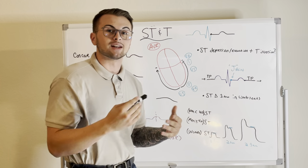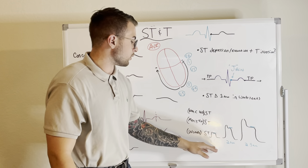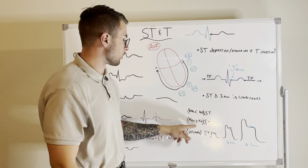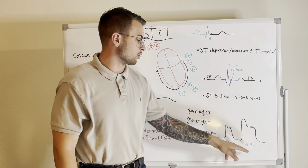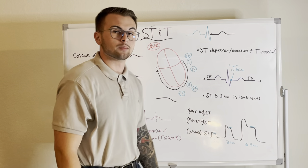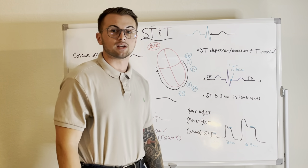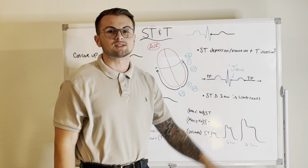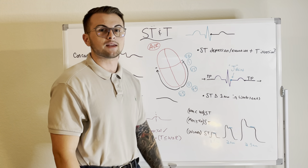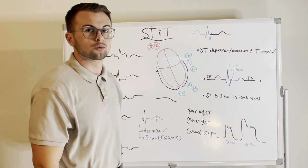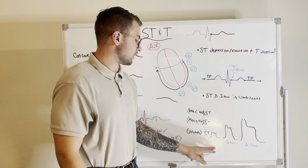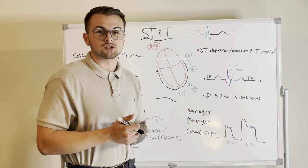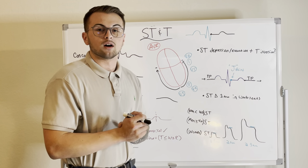An ST variation of 1.5 millimeters for women, 2 millimeters for men older than 40, and 2.5 millimeters for men younger than 40 is also considered normal. So really evaluate any ST elevation or depression, but use these guidelines for different ages and genders so you don't overreact to a normal finding.